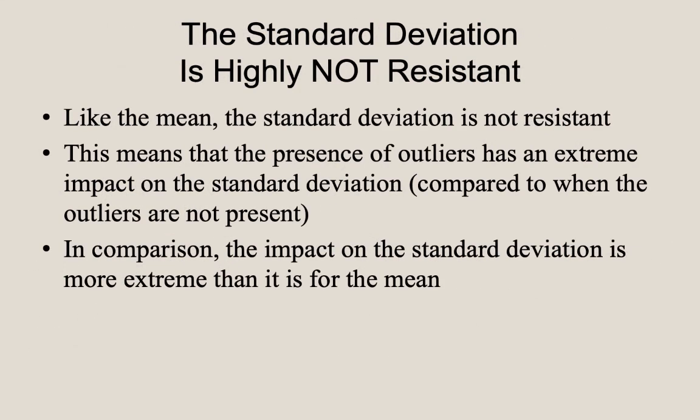Recall from our previous discussion, we saw that the mean is not resistant to the presence of outliers. In one of the module activities for the module on descriptive statistics for normal data, we will explore this idea a bit further, but we will note here that the standard deviation is really not resistant to the presence of outliers. In other words, in the presence of outliers, the standard deviation can be extremely distorted.